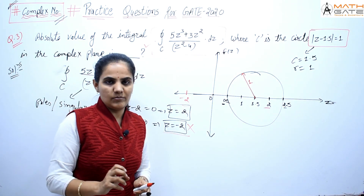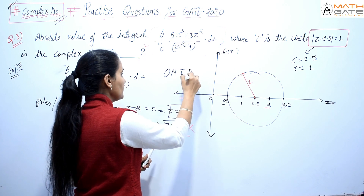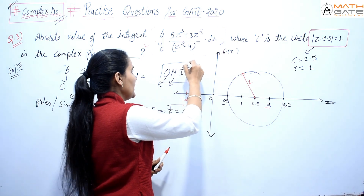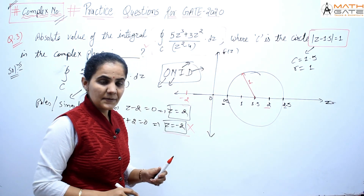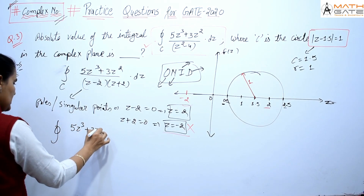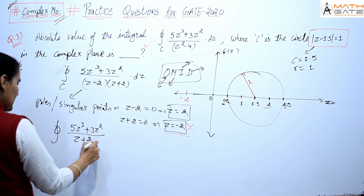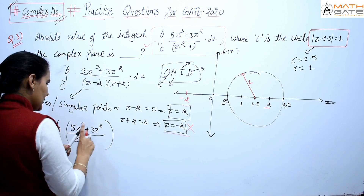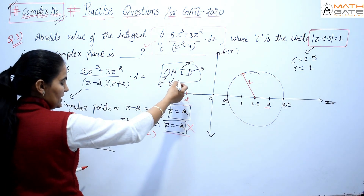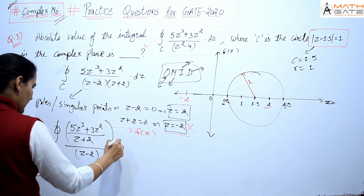We solve this using Cauchy's integral theorem. Using the ONID technique: the point outside the circle (z = -2) goes to the numerator as (z + 2), and the point inside the circle (z = 2) goes to the denominator as (z - 2). So the integral becomes: closed integration C of f(z) / (z - 2) dz.